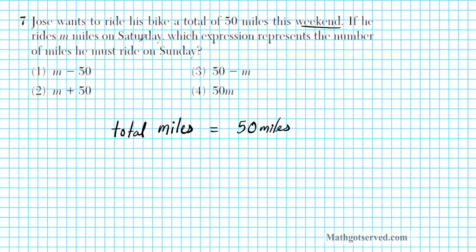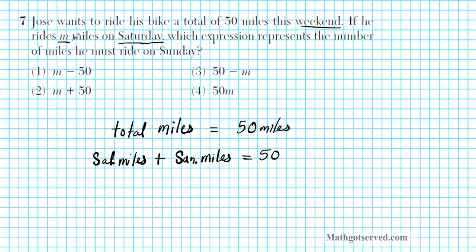The weekend is made up of Saturday and Sunday. So we can rewrite this as Saturday miles plus Sunday miles equals 50. We're told that Jose rides n miles on Saturday, so we can represent Saturday miles with n. So n plus Sunday miles equals 50. The question asks which expression represents the number of miles he must ride on Sunday, so Sunday miles should be isolated.